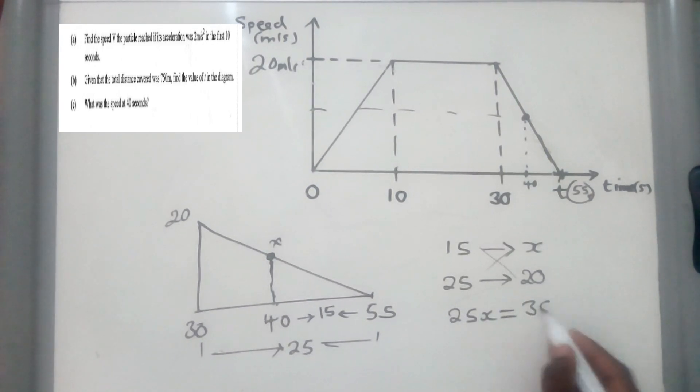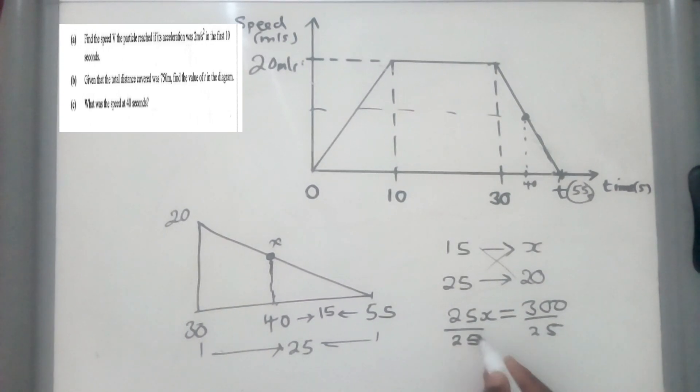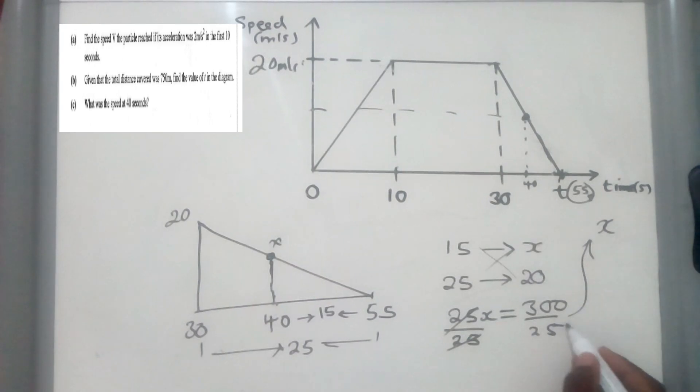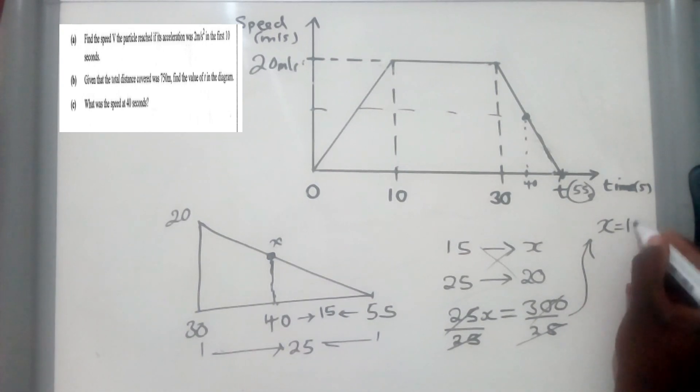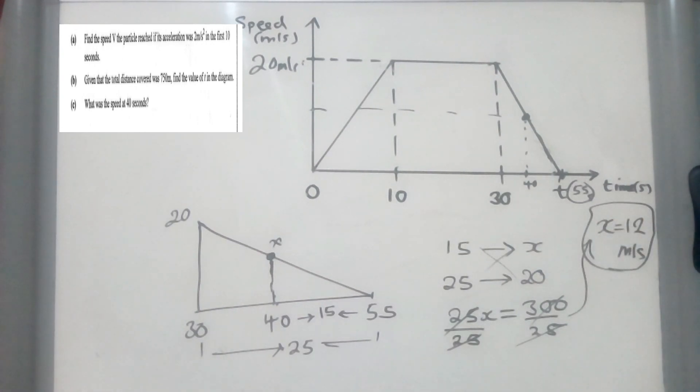So now divide by 25, divide by 25. So what are we getting? So let me put it here. So the value that we're getting x will be equal to 25 into 300. It's 12, I think. Yeah, it's 12 meters per second. So 12 meters per second is our speed. This is how you do it.